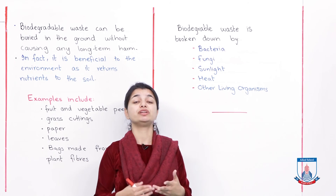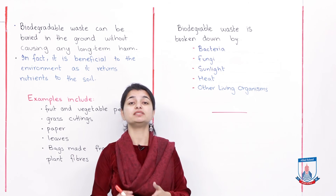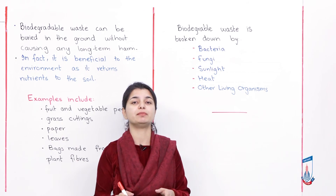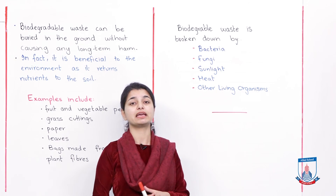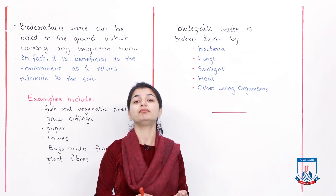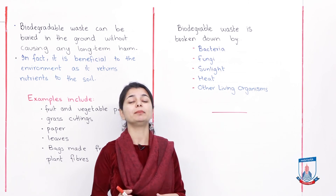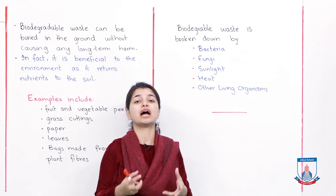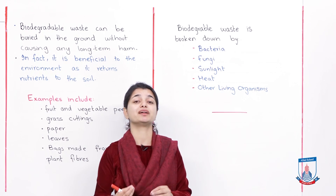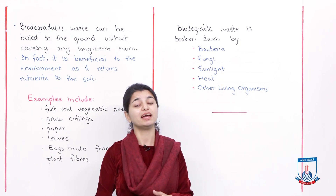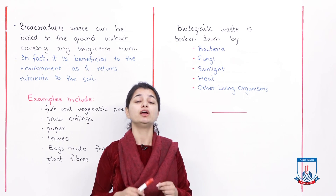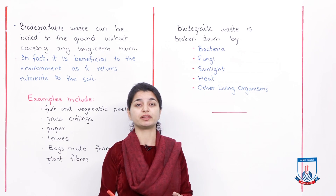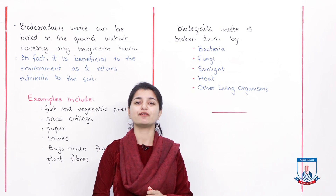Lastly, we discussed that biodegradable waste is decomposed by different microorganisms — bacteria, fungi, other small organisms, sunlight, and heat. These are all things that decompose biodegradable waste. In the next lecture, we will focus on non-biodegradable waste and its effects on animal life and surroundings. Non-biodegradable things do not decompose — once you use them, they remain on Earth and release toxic chemical substances. Plastic is a very common example. Stay tuned, watch this lecture, and by the end you should be able to tell what is biodegradable and non-biodegradable waste. Take care, Allah Hafiz, see you soon.